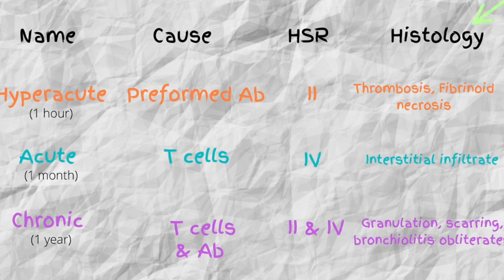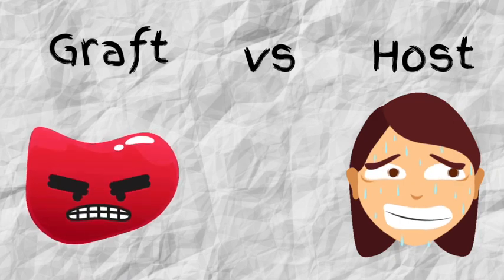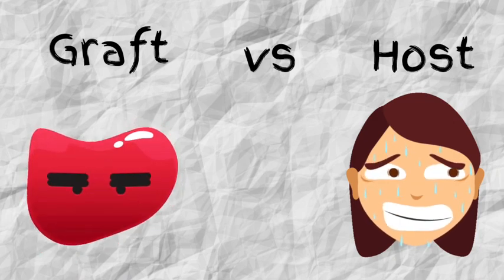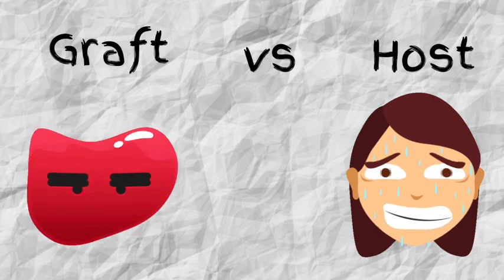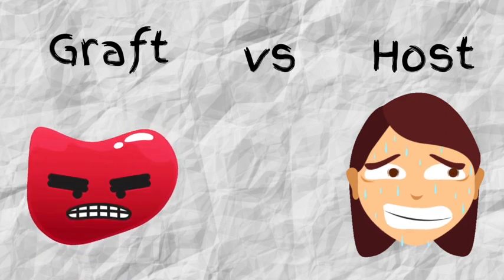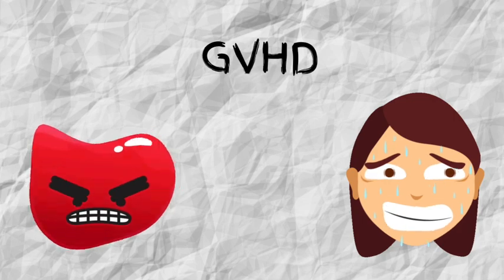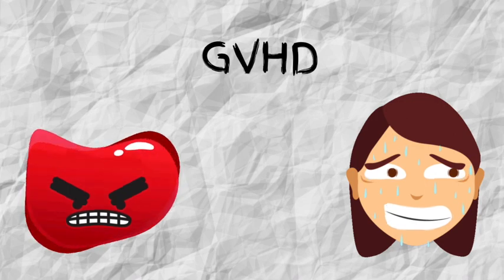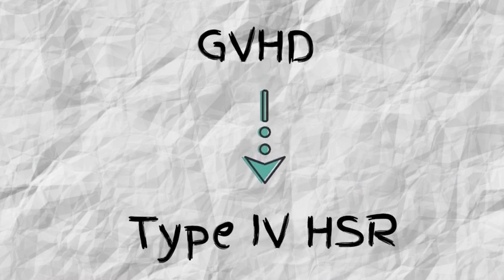Now let's look at graft-versus-host disease. The key difference is that the graft is attacking the host. Another major difference is that GVHD can occur at any time — there is no specific time frame. The abbreviation GVHD has four letters, which helps you remember it is a type 4 hypersensitivity reaction — very high yield.